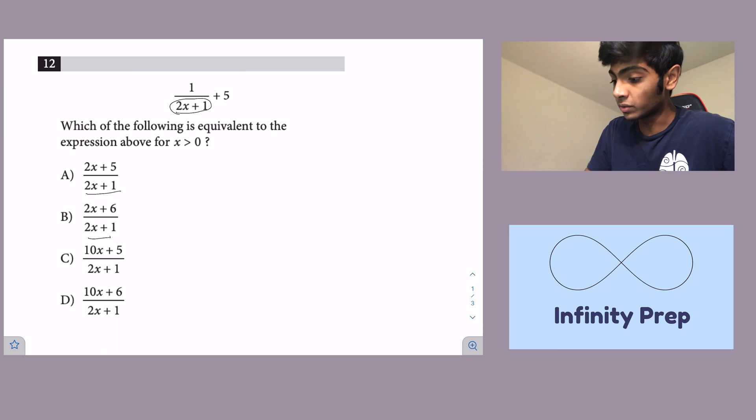So all we have to do to get 2x plus 1 over here as the denominator is we have to multiply it up top as well, because this way they just cancel out. So really we're just left with 5, but it's just a different way of writing 5.